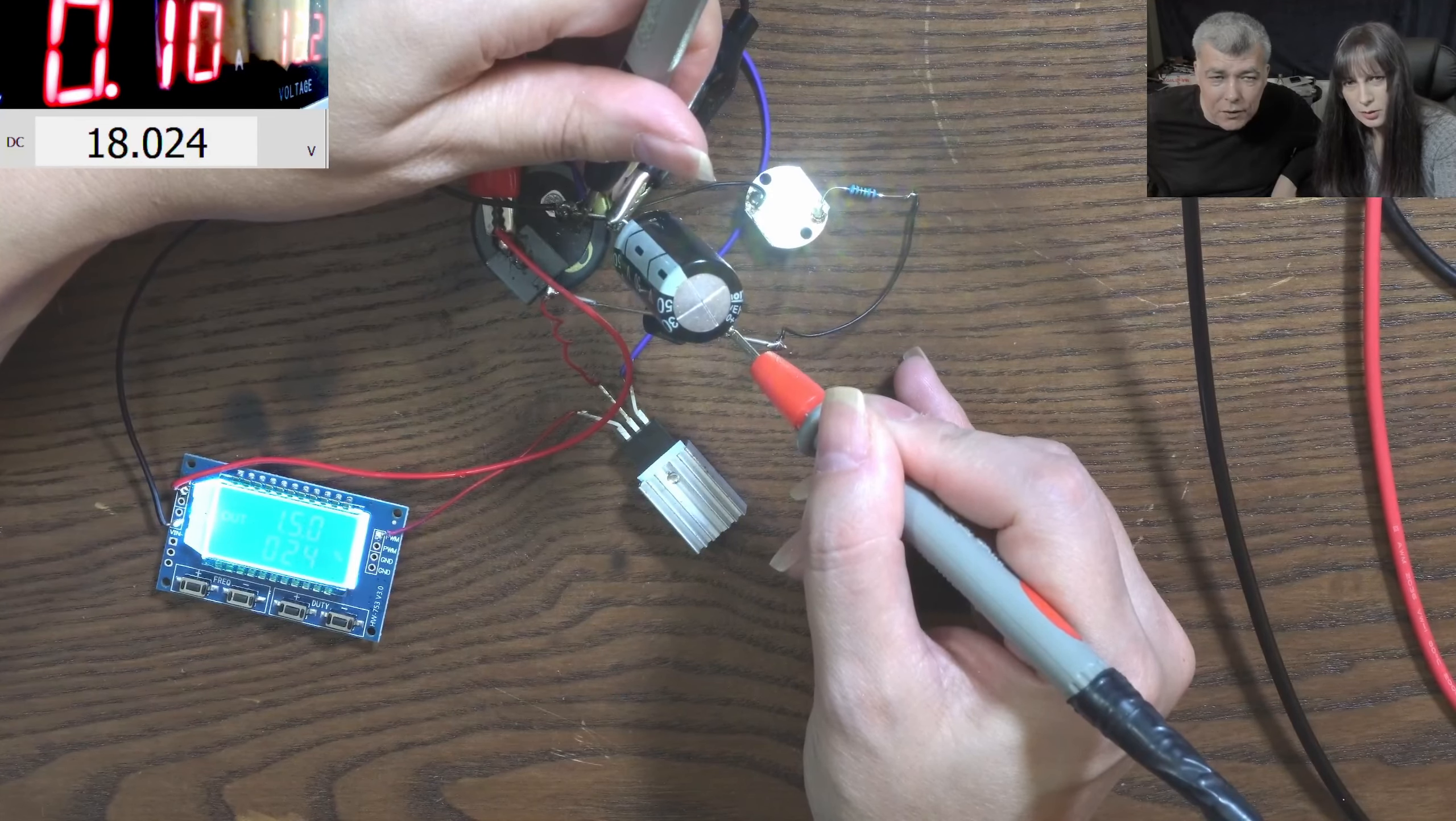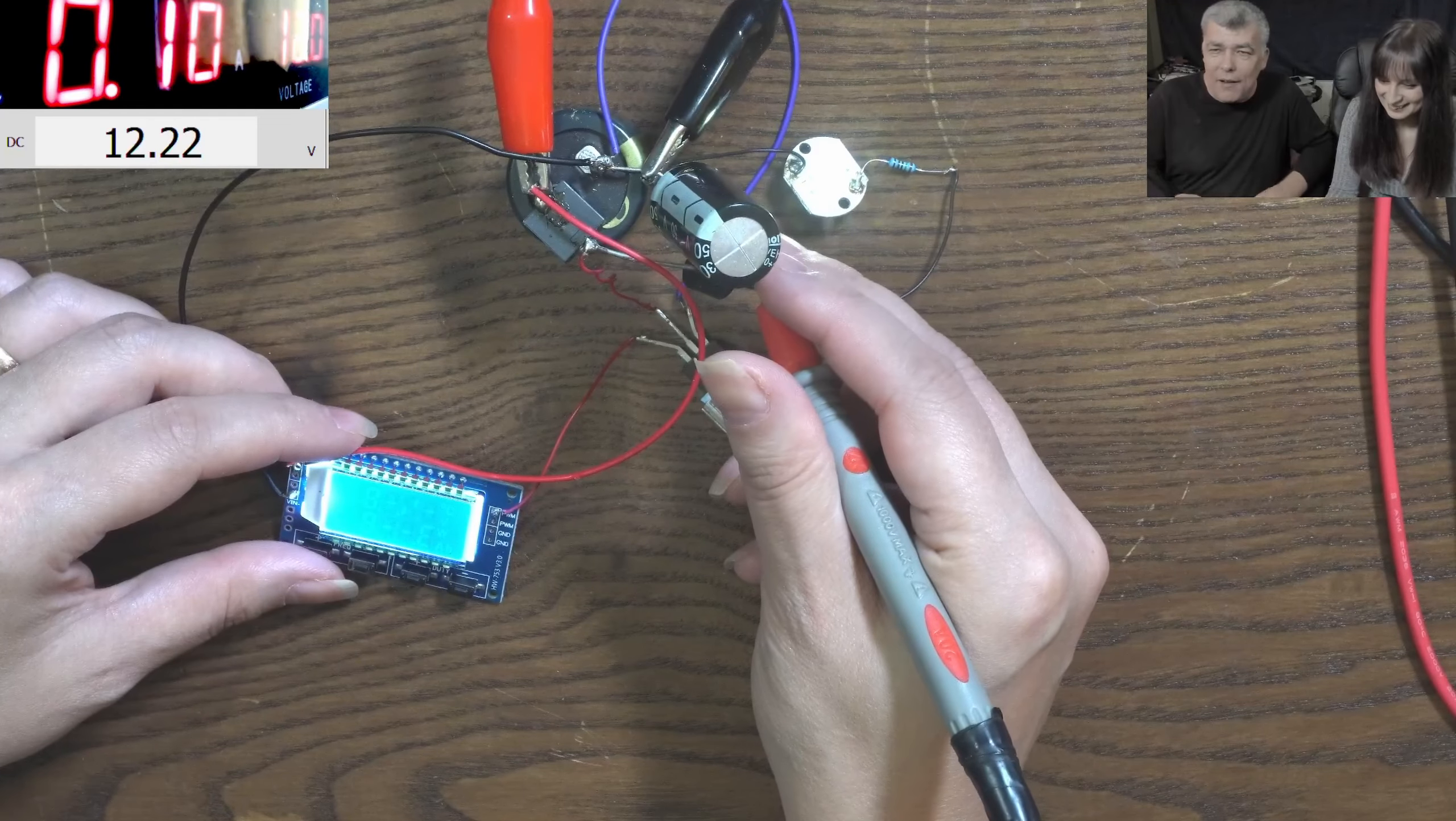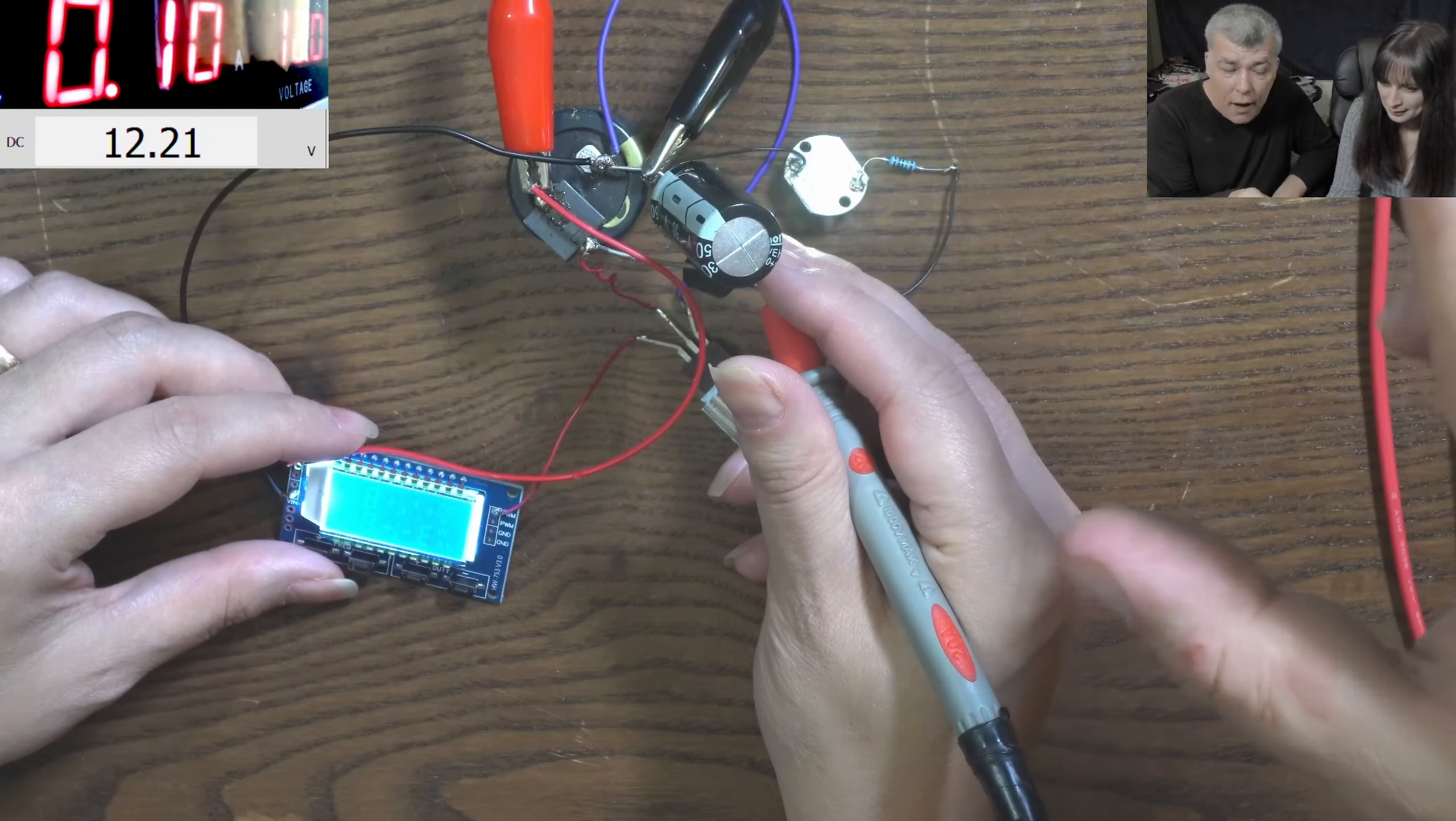So the input voltage is 12 and the output is 12.2. But remember before with the same amount of current it was 18 volts. So why do you think that happened? We changed the frequency. But what changed? Why with the same amount of current I get more output voltage compared with low frequency?